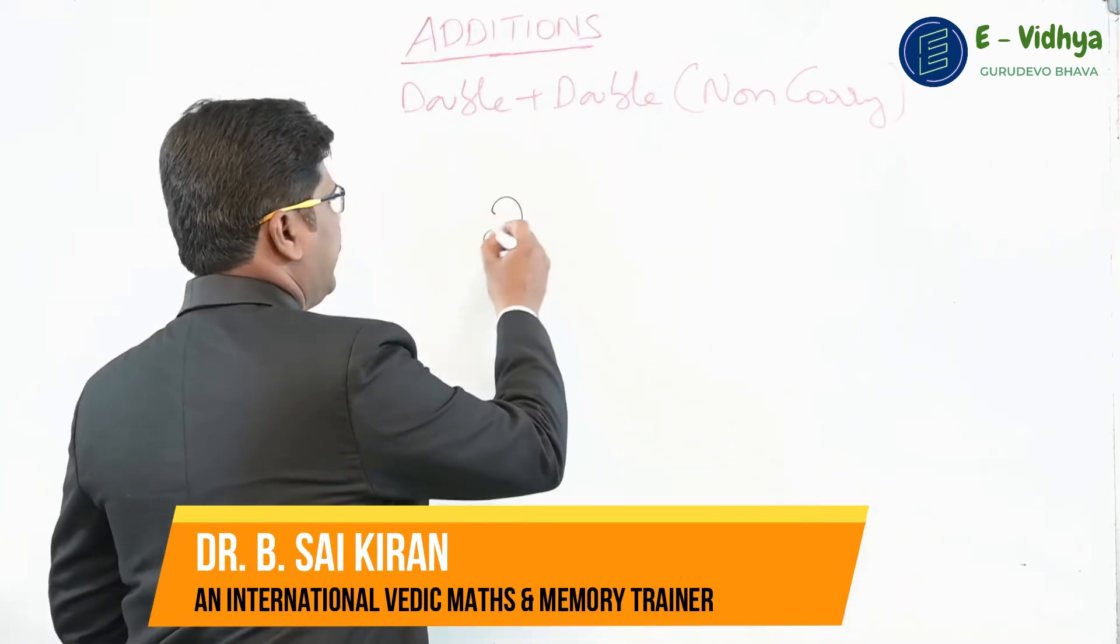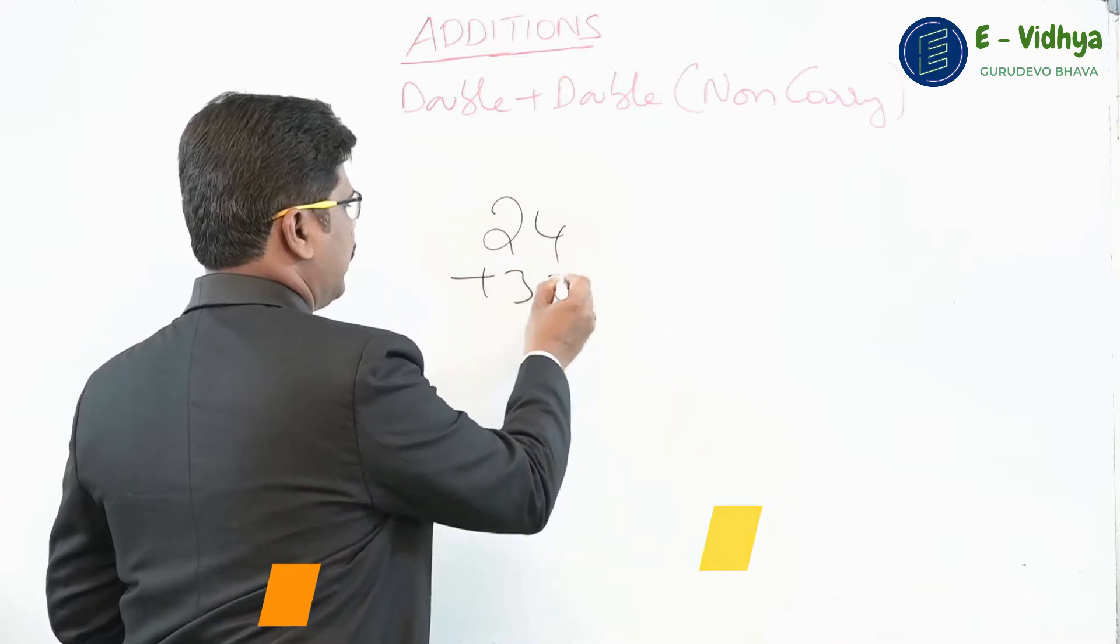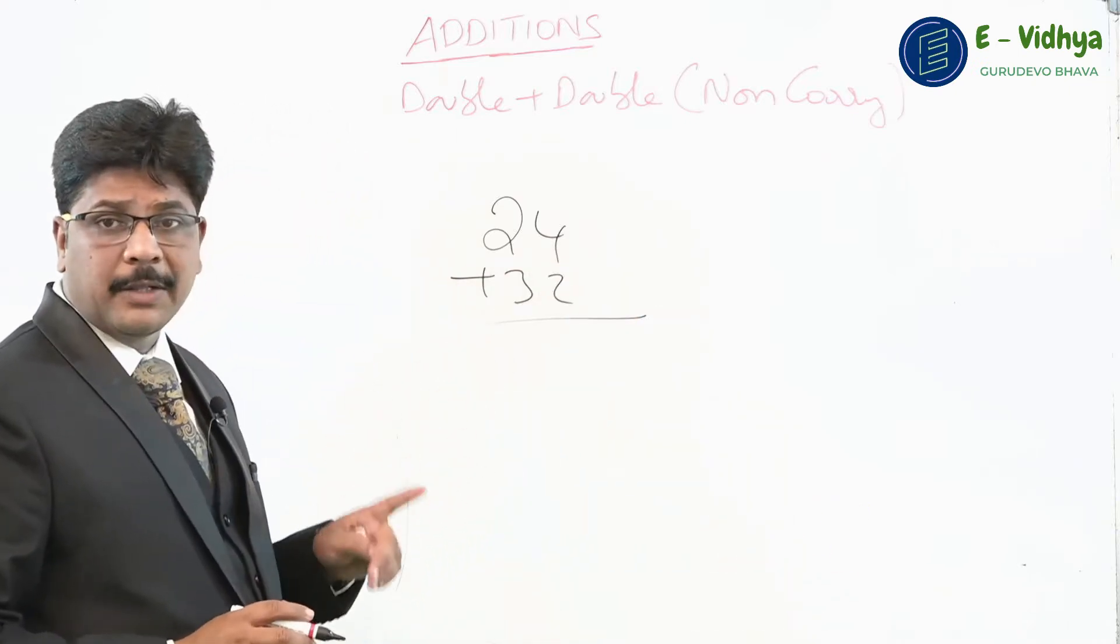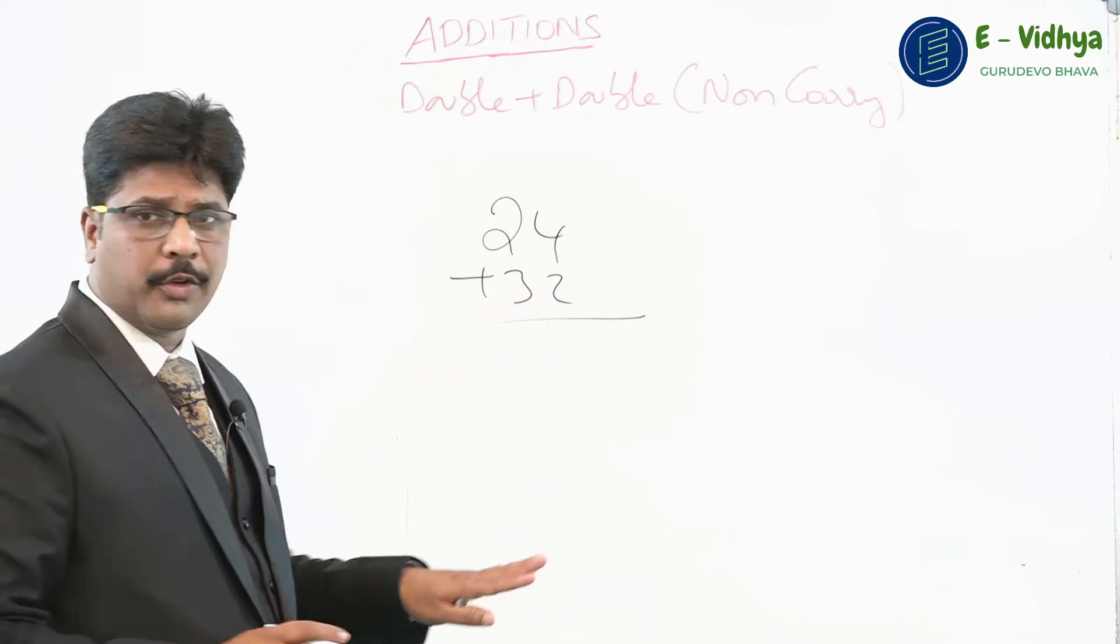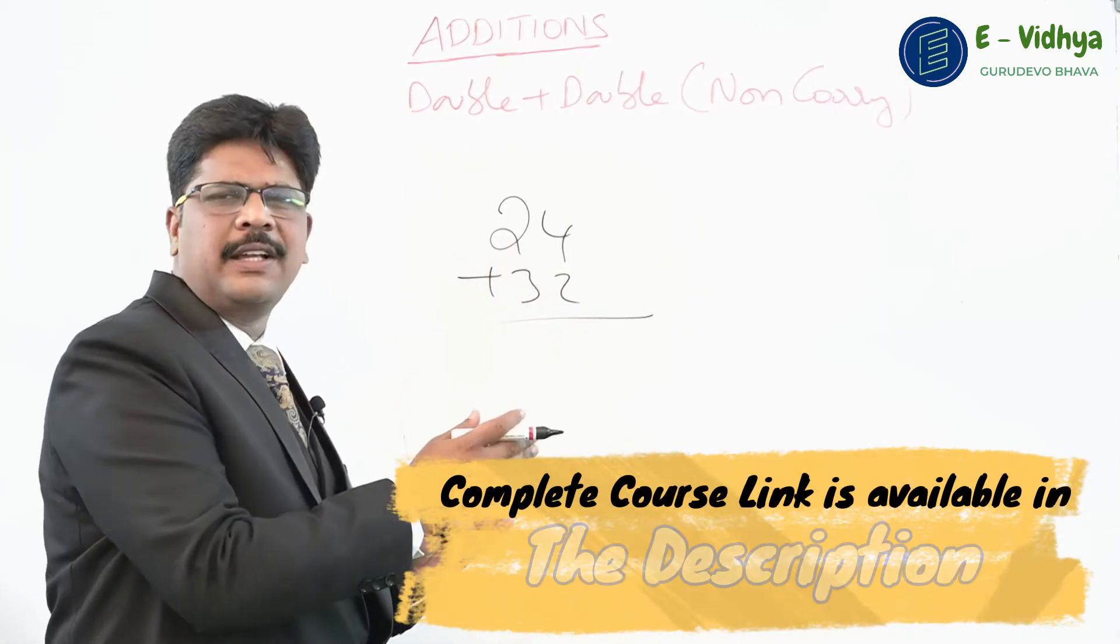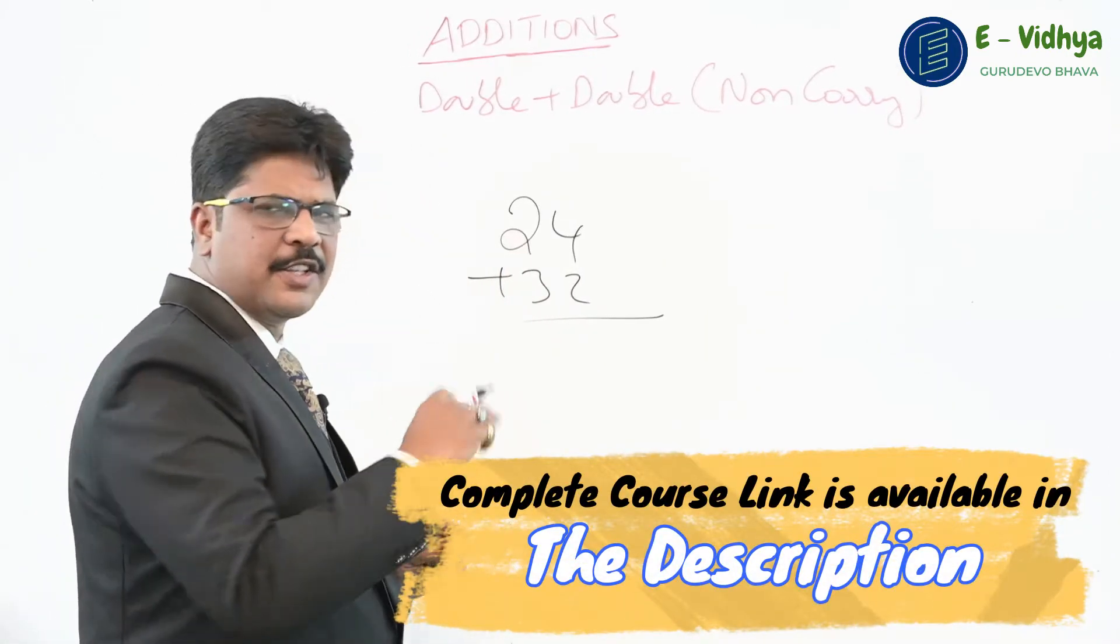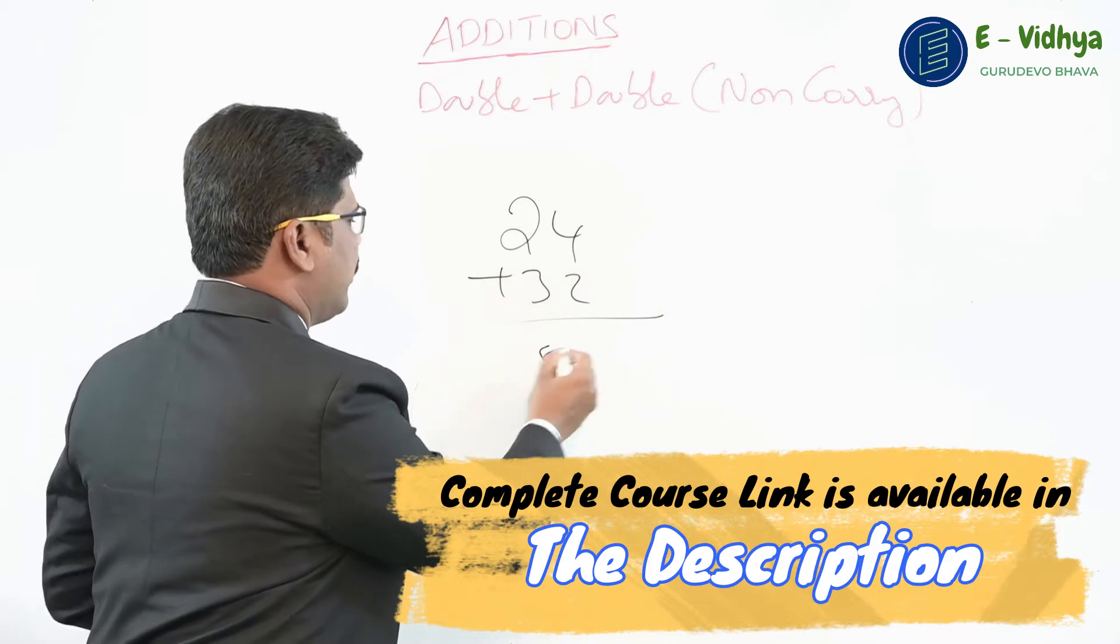Now, look at this problem: 24 plus 32, how much? As I already told you in Vedic math, we calculate from left to right, not right to left. Since both are non-carry, it is as easy as that. You can just write from left to right, the answer is 56.